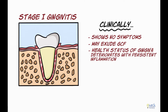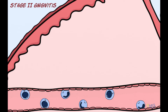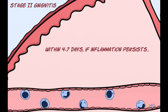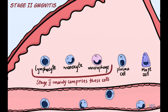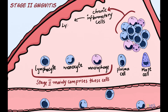Persisting inflammation may result in the health status of the gingiva deteriorating and the disease progressing to the next stage. Stage 2 of gingivitis may start within 4 to 7 days, and persisting inflammation leads to further recruitment of leukocytes like lymphocytes, monocytes, as well as macrophages. Also present are plasma cells and mast cells. However, this stage is characterized by predominant accumulation of lymphocytes.